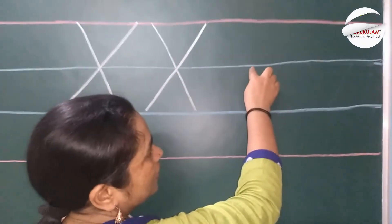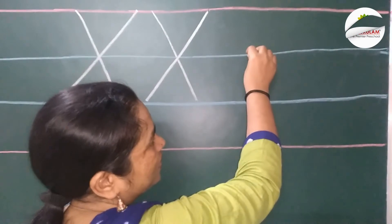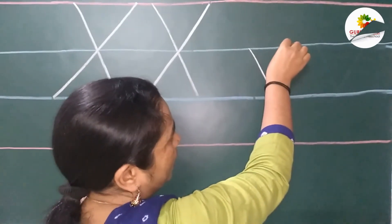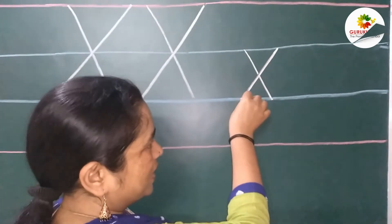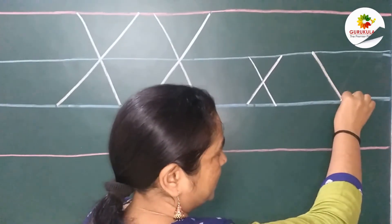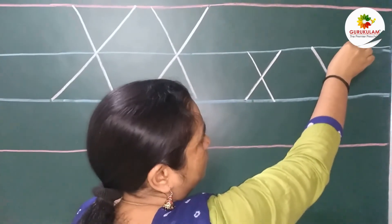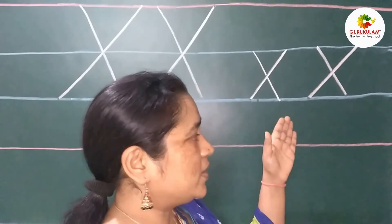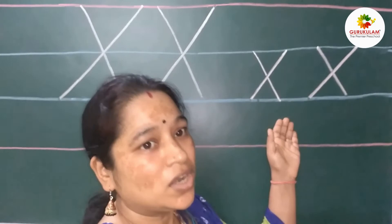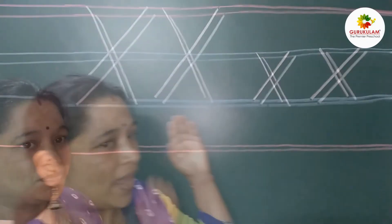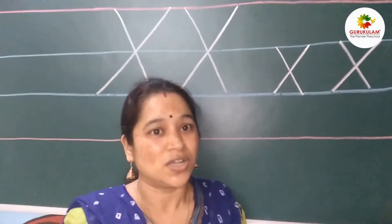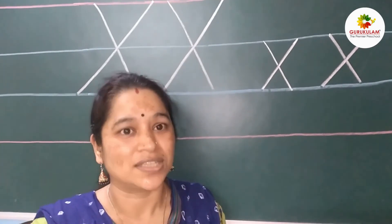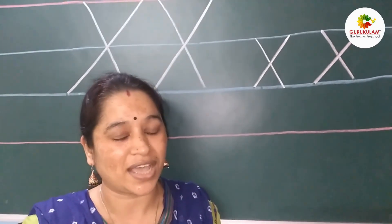Now I am going to show you how to write small letter X. Small letter X will come in between these two blue lines. Slanting line, go up and one more slanting line. Slanting line and one more slanting line. This is our small letter X, or lowercase X. Hope you understood how to write capital letter X and small letter X.